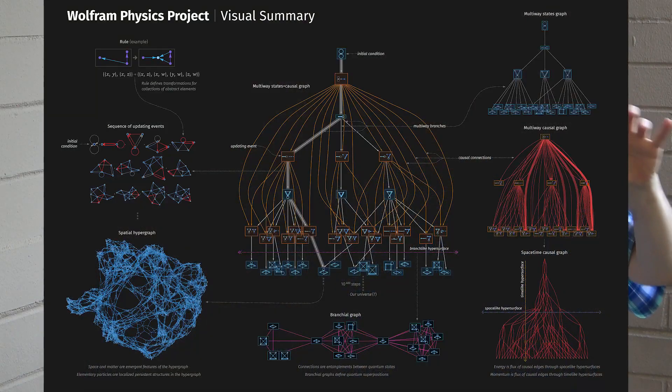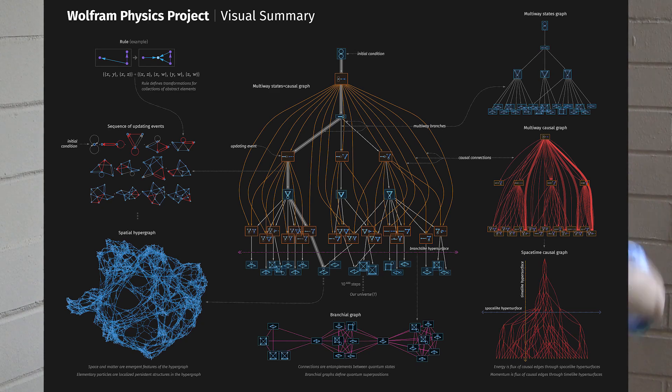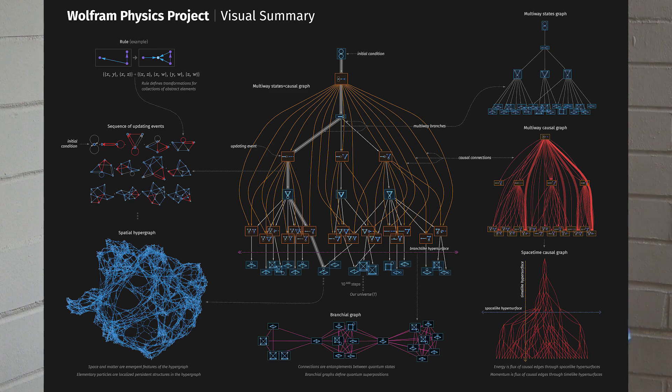As a really practical matter, we have this kind of visual summary picture that we made, which is a pretty good place to start when explaining this to people. You've got this rule, you apply the rule, you're building up this big hypergraph, you've got all these possibilities. So basically space is represented as a hypergraph, transformation of that space is kind of time, and the curvature of that space is gravity.